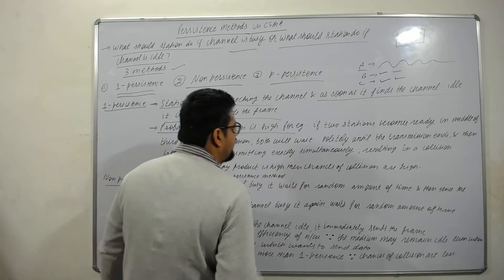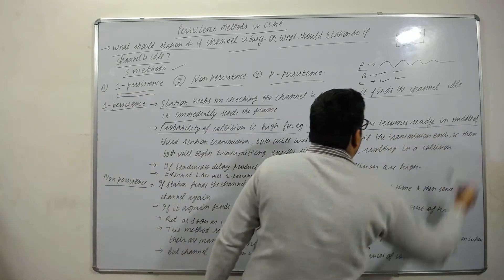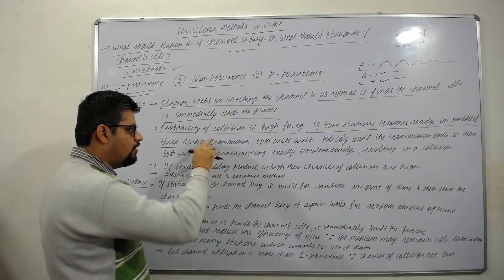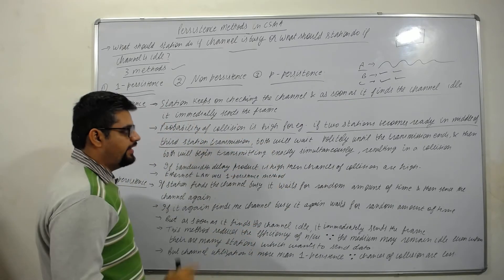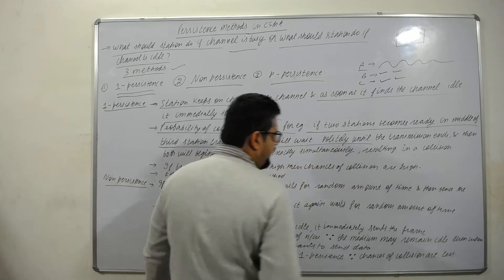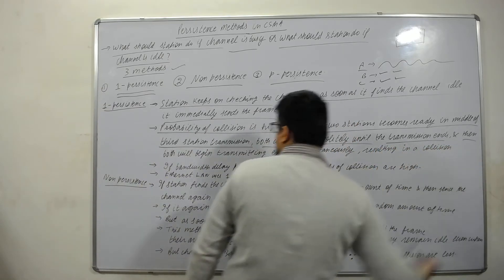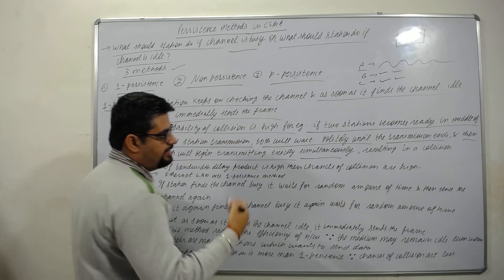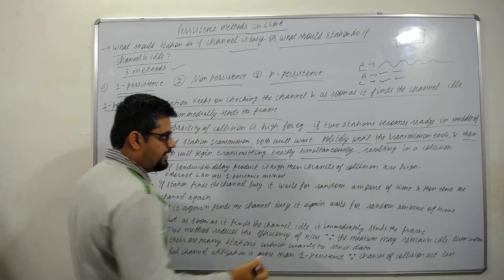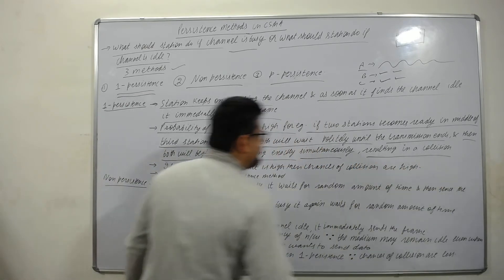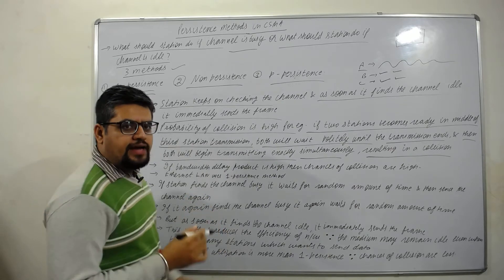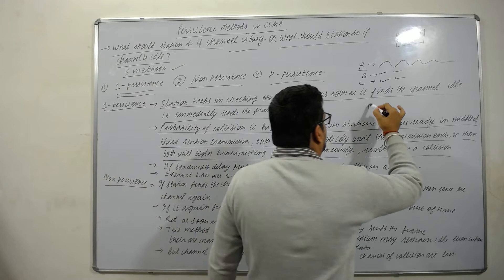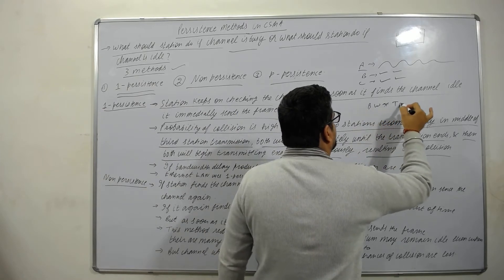The probability of collision is high. For example, if two stations become ready in the middle of a third station's transmission, both will wait politely until the transmission ends and then both will begin transmitting exactly simultaneously, causing a collision. Also related to this is the bandwidth-delay product, which is bandwidth multiplied by propagation time.